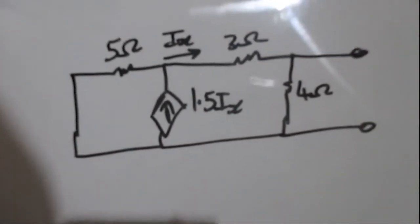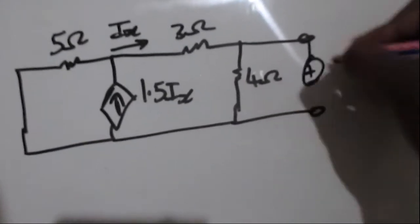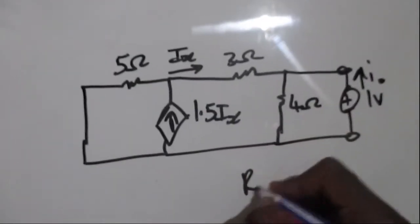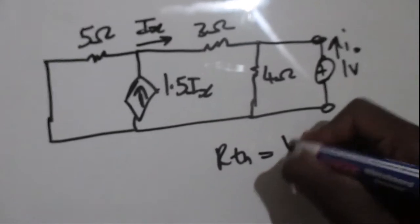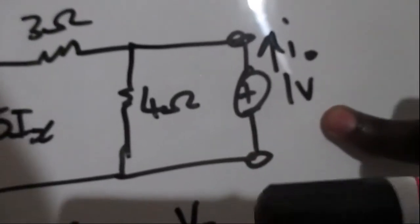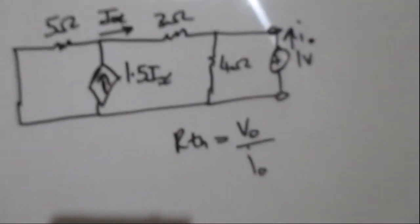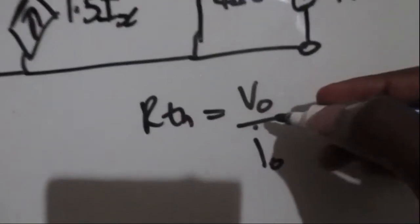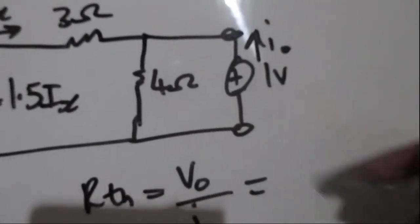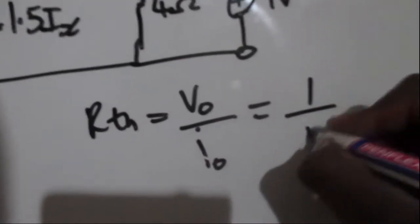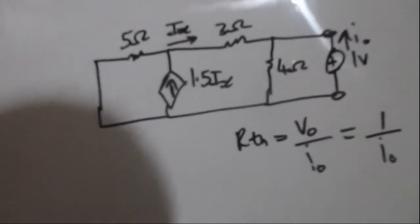Since the dependent source stays intact, we use the test source method. We introduce a test source of 1 volt, and then Rth = Vo / Io by Ohm's law, where Vo is the 1-volt test source. Our task is finding Io, and since Vo = 1 V, Rth = 1 / Io.